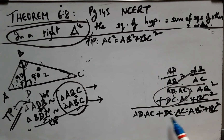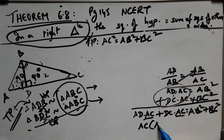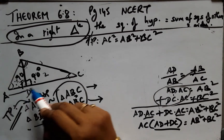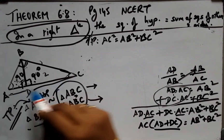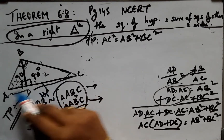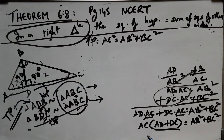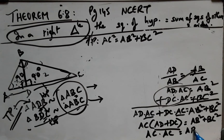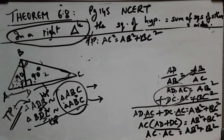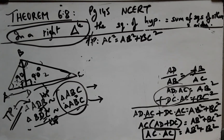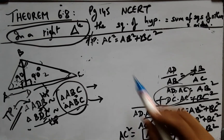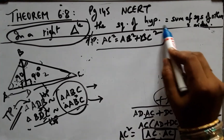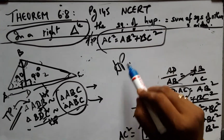Coming back to AC: we note that AD plus DC equals AC. Summing the two results: AB² + BC² = AC · AD + AC · DC = AC(AD + DC) = AC · AC = AC². Therefore, AC² = AB² + BC². Hence proved.